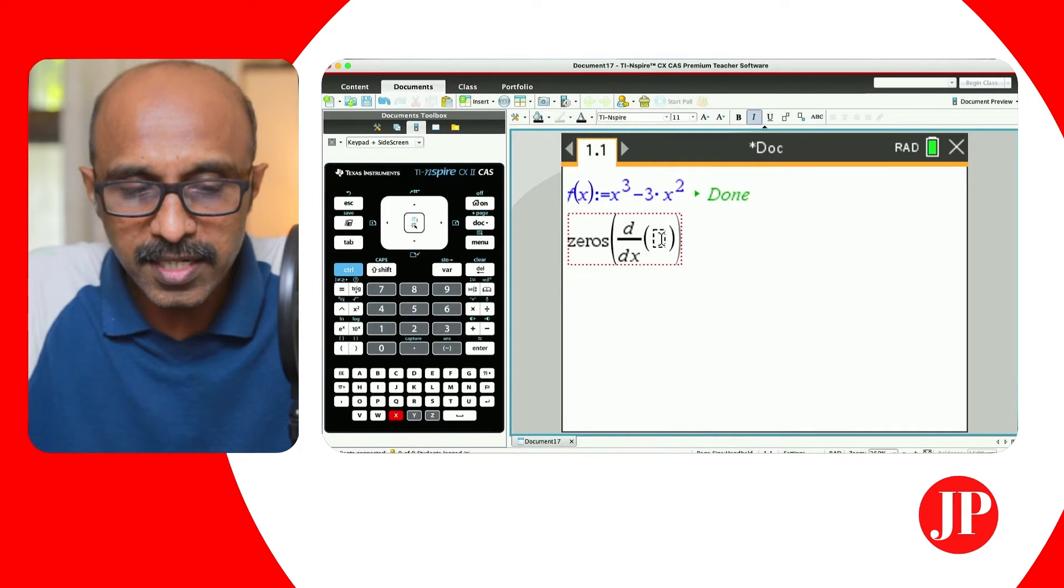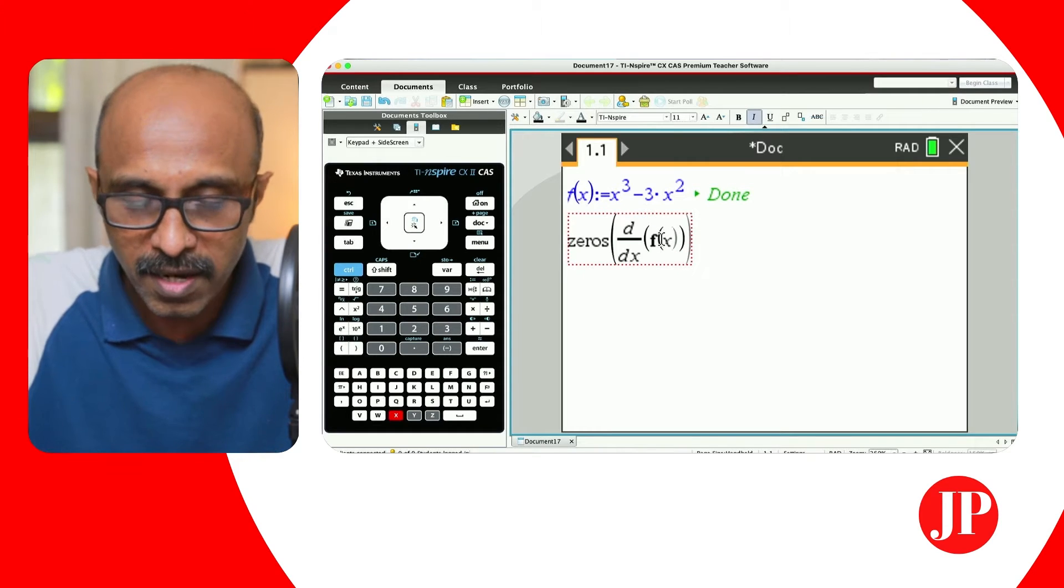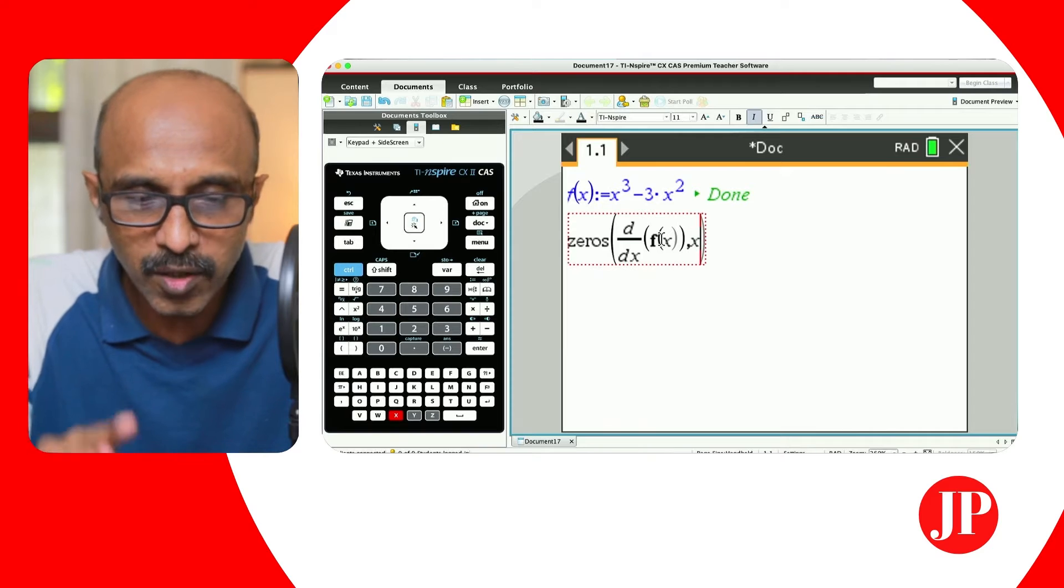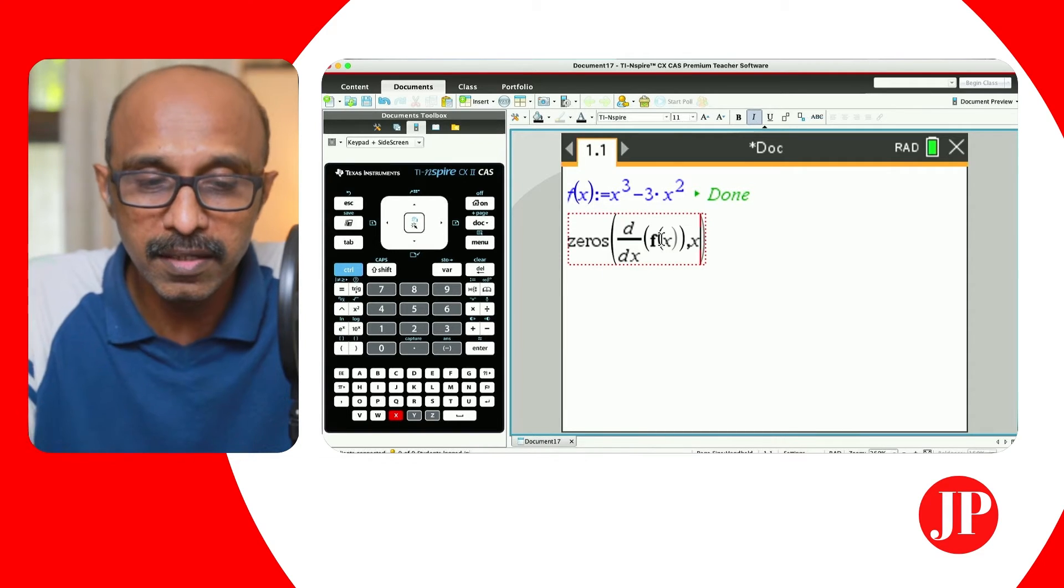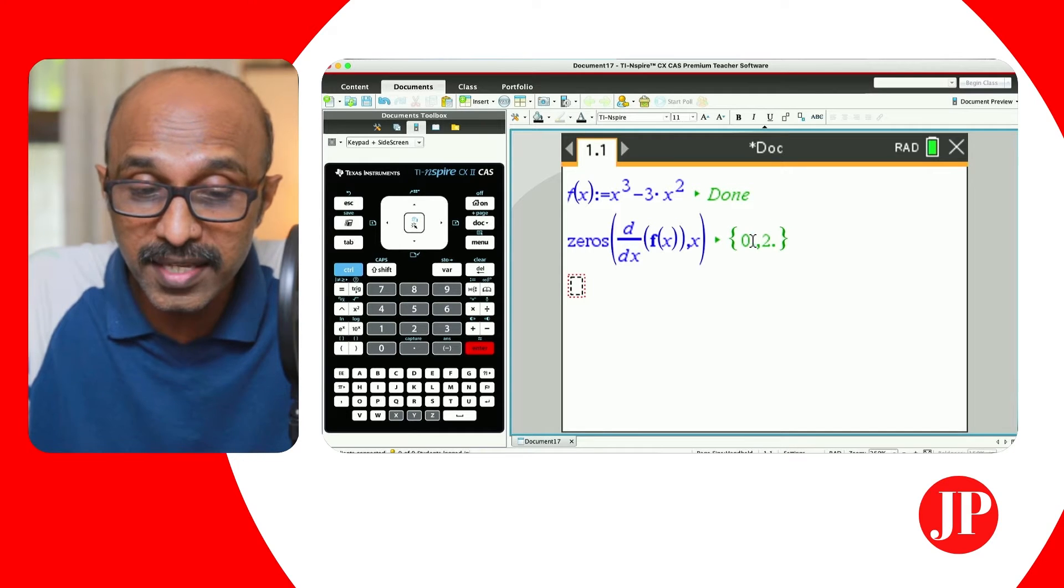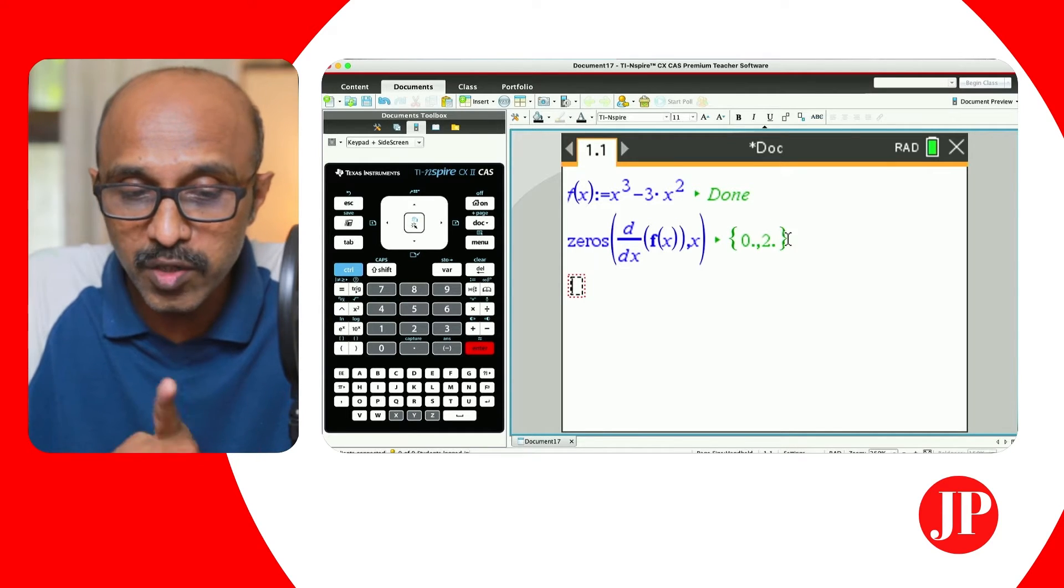Since f(x) is already assigned I'm going to say f'(x). We've got to be careful with these brackets. Comma x is always a template in the TI Inspire. Now hit enter and that will give me the x coordinates. These are the x coordinates. There are two values for the stationary x coordinates of this function.